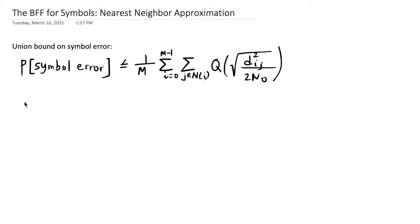This is Neil Pituari. In this segment, I'm going to talk about the nearest neighbor approximation. The union bound is an expression that provides an upper bound for the probability of symbol error for our given constellation.